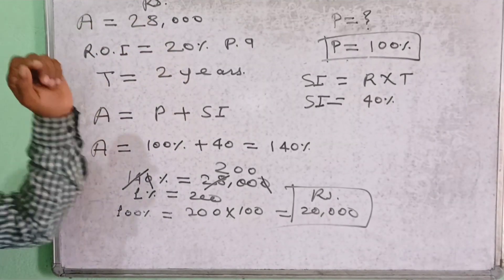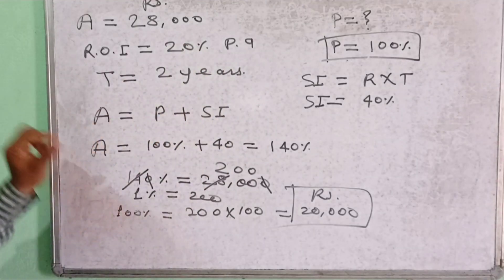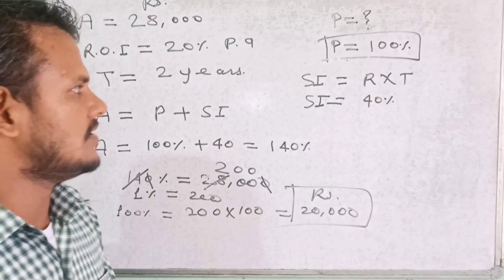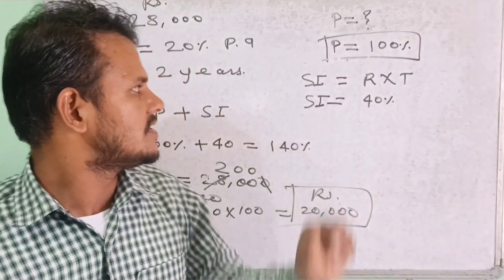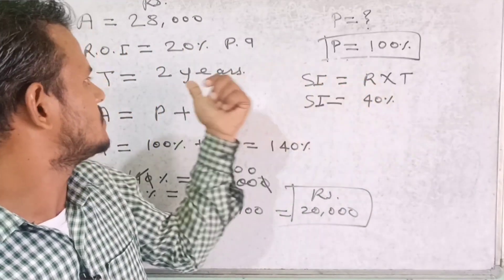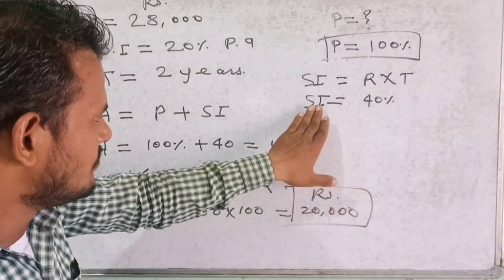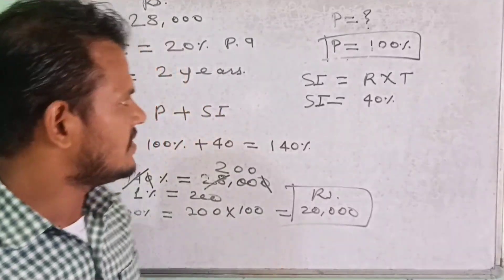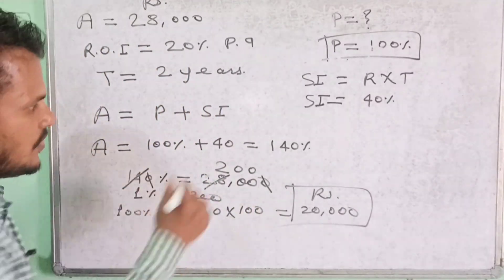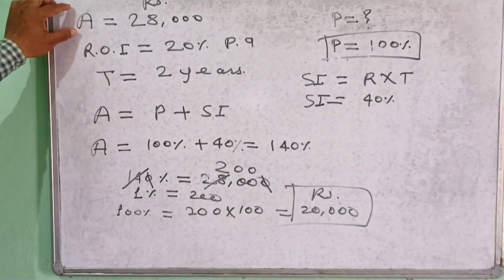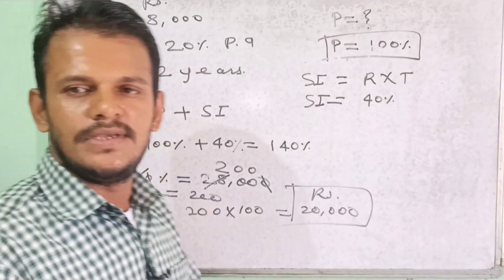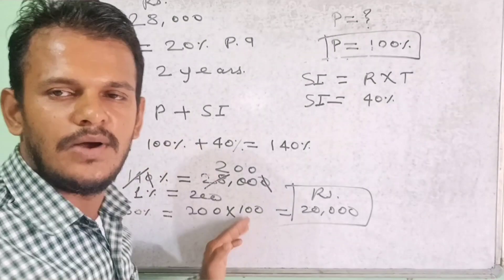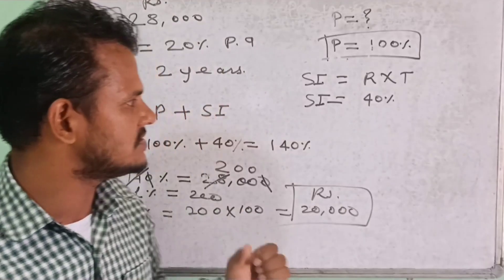Amount is given as Rs. 28,000, rate of interest is 20% per annum, time is 2 years — we need to find the principal. The principal is always 100%. Simple interest equals rate into time, so 20 into 2 = 40%. Principal 100% plus simple interest 40% gives total amount 140%, which equals Rs. 28,000. Therefore 1% = Rs. 200, and 100% = Rs. 20,000. So our answer is Rs. 20,000 — that is our principal.